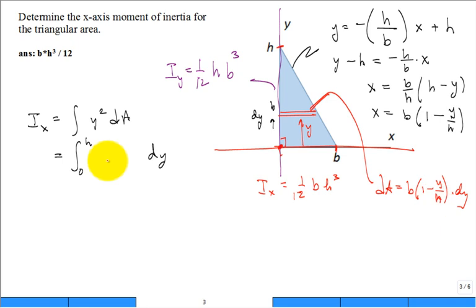So, I can come over here. I'm going to have my y squared times my dA, which is b times 1 minus y over h. And I didn't leave enough room, of course. Put a dy right there.